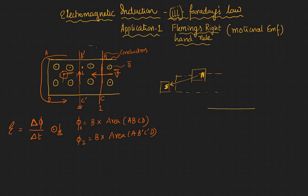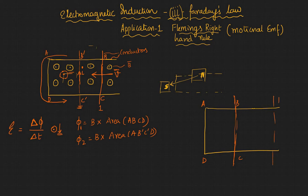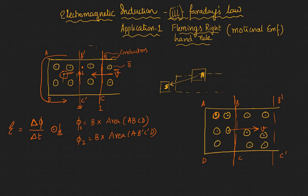Now let's look at the second scenario. You have the same magnetic setup, but in this case you're moving the conductor in the opposite direction — from initial position A-B-C-D towards the right to B-dash C-dash. The magnetic field remains the same; just the direction of velocity is changing.